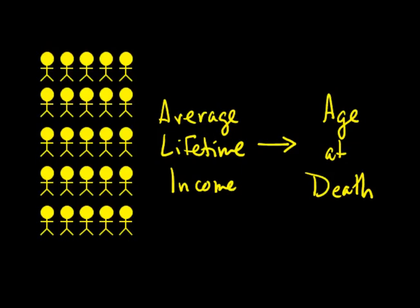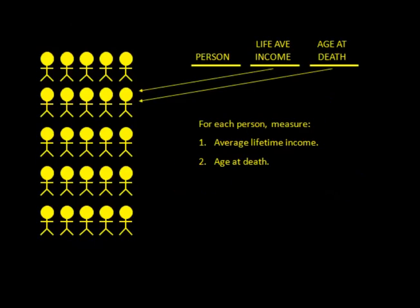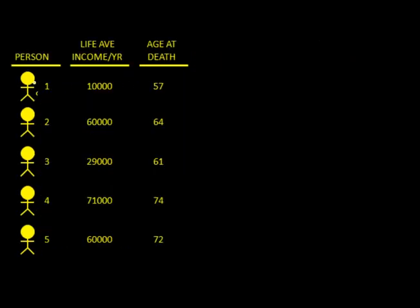The people on the left-hand side represent the people in our dataset. To test this causal relationship between average lifetime income and age at death, we need to measure both variables on every single person. We would have every person's lifetime average income and their age at death. Then we set up our data so that each person has one row — for example, person one has an average income of $10,000 per year and an age at death of 57, and so on for each person.